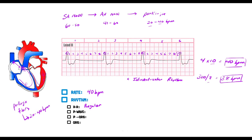Looking for P waves — this is lead two, so we should see an upright P wave if it's sinus. Look for the P wave before the QRS complex... there's no P wave before any QRS complex. No P wave means the SA node is not firing. For a P wave to appear, the SA node, an ectopic area, or even the AV node would need to fire.